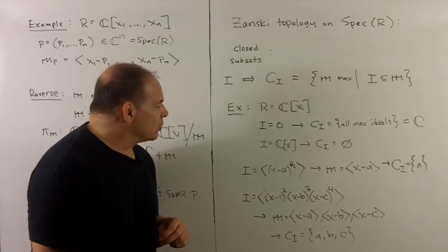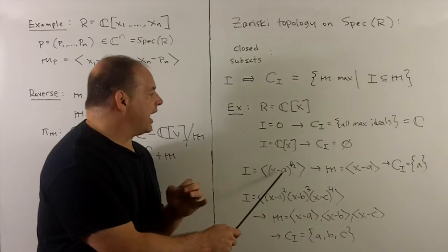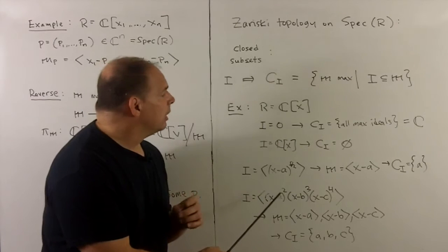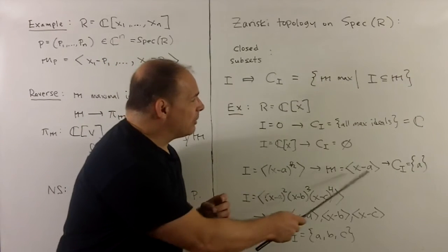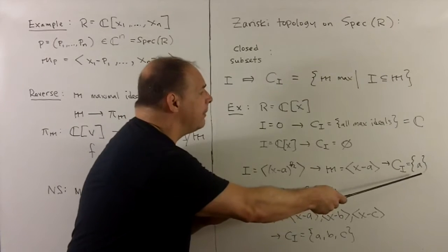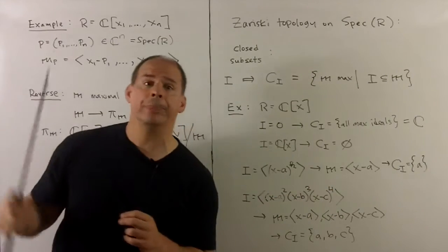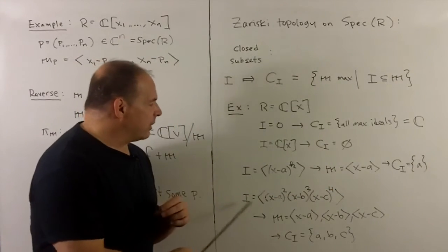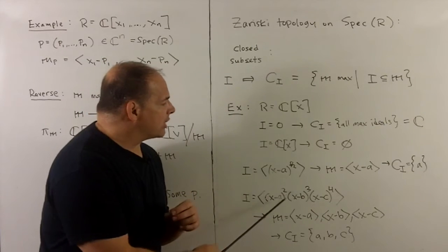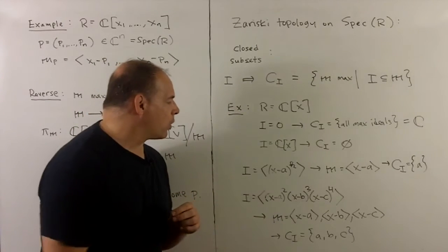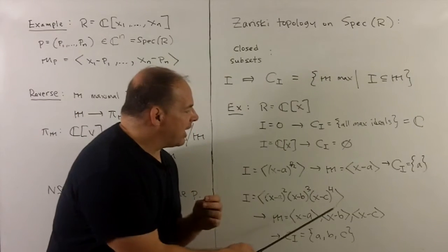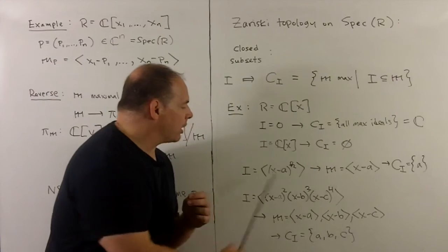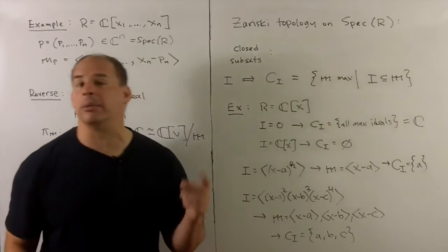So we could be looking at ideals which look like, say, take X minus A to the Kth power. The only maximal ideal that contains this will be X minus A. And so I just get the point A by our identification here. Likewise, I could take something more complicated. So just take X minus A squared, X minus B cubed, X minus C to the 4th. Maximal ideals that contain this will be X minus A, X minus B, X minus C. And what comes out as a closed set is A, B, C.